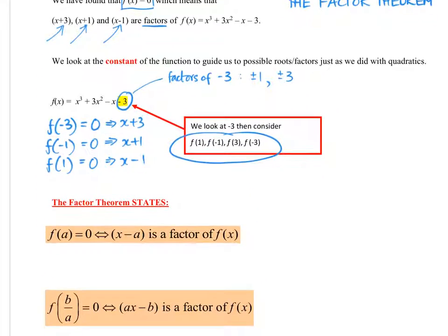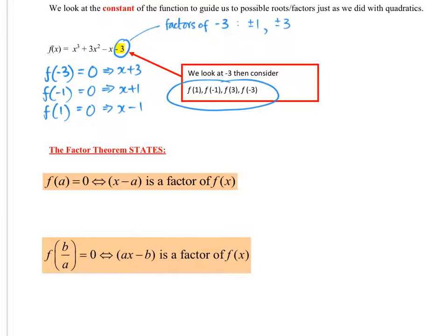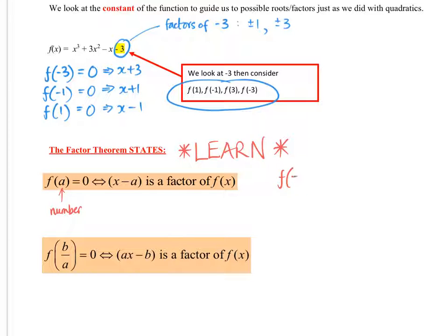This is what the factor theorem actually states, and you need to learn this - it's not given to you. If f of a - and that a is just a number, it could be a fraction as well, it could be any number - if that equals 0, then x minus a is a factor of f of x. So if I gave you f of minus 2 equals 0, what is the factor? x plus 2 is a factor.